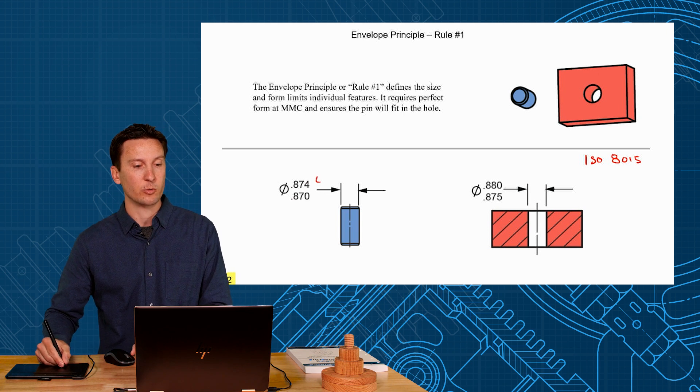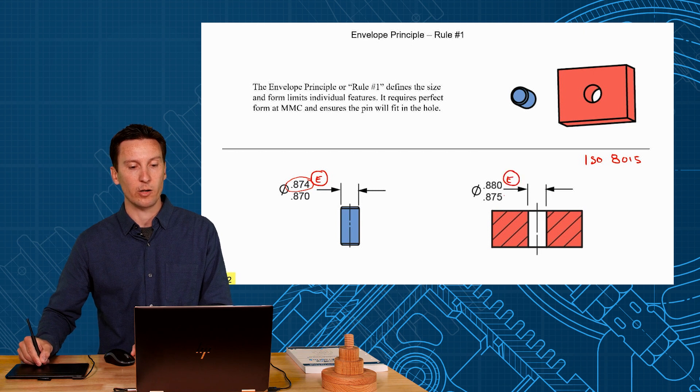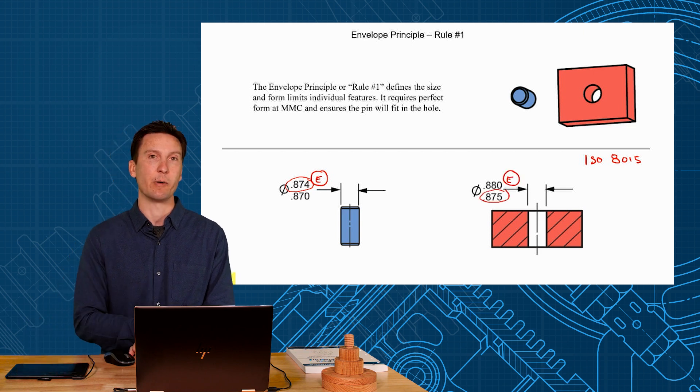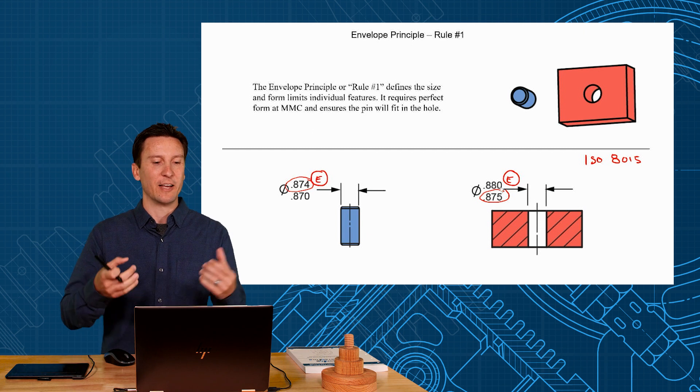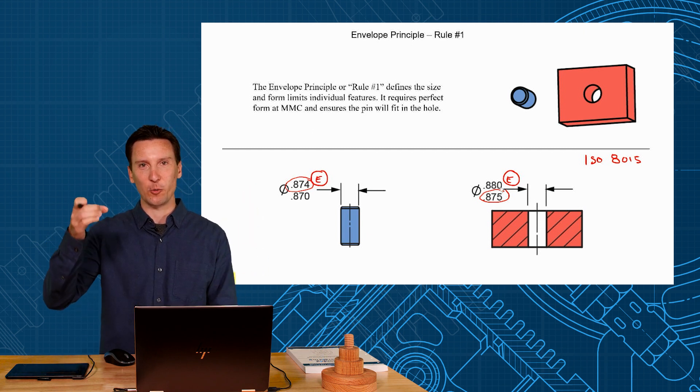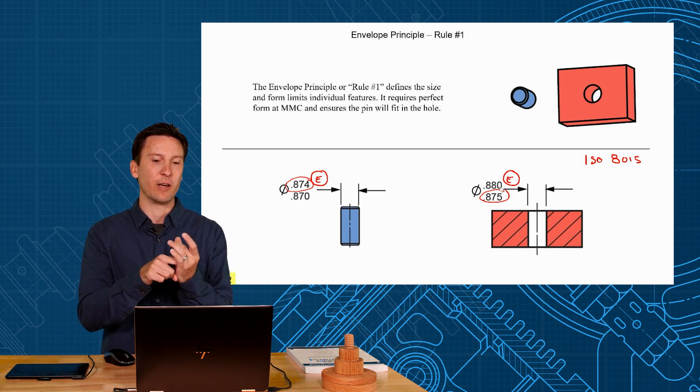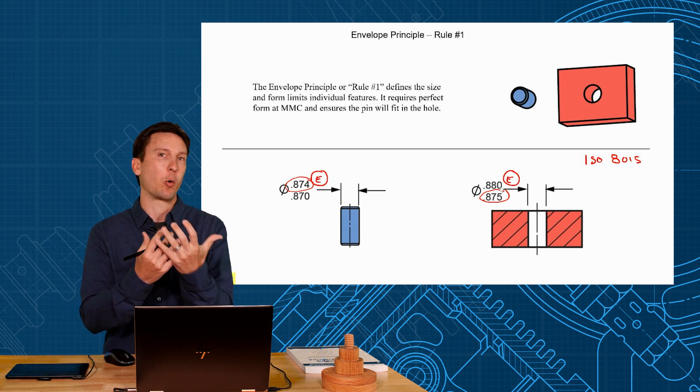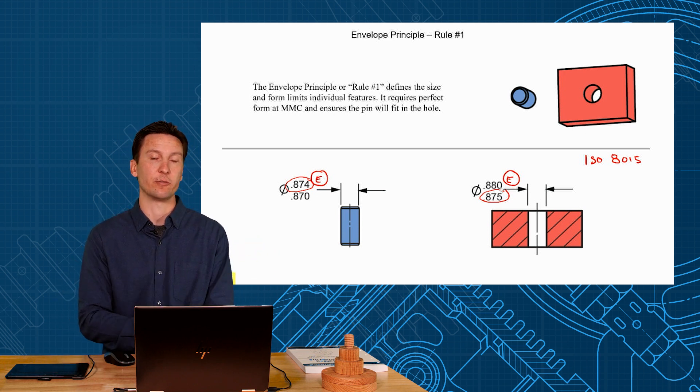You got a circle E. So we have to add a circle E to this, this is invoking perfect form at MMC, and you circle E on this one invoking perfect form at MMC. So without that this could look like a little wet noodle and a little wet noodle hole and they might not always fit. So getting that envelope requirement is important for features of size to fit.